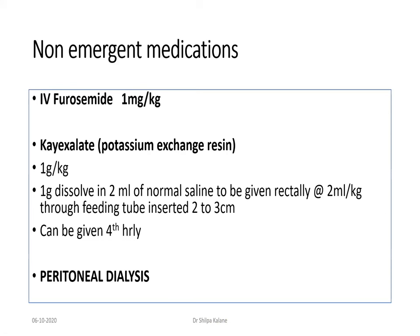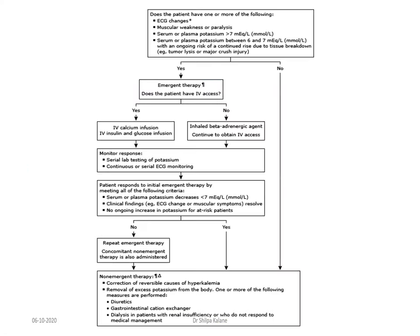Peritoneal dialysis is always an option for refractory hyperkalemia. When a baby is symptomatic or has severe hyperkalemia, start with emergent medications and simultaneously start non-emergent medications. The management flowchart: confirm potassium level, start ECG monitoring, monitor vitals, start emergent therapy with calcium gluconate, glucose-insulin drip, and beta-adrenergic agent inhalation. Monitor response via serial lab testing and continuous ECG monitoring. If the patient responds well, find and treat the cause. If not, proceed to peritoneal dialysis. Thank you very much.